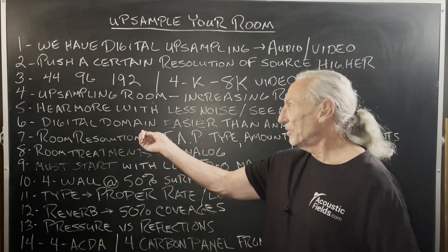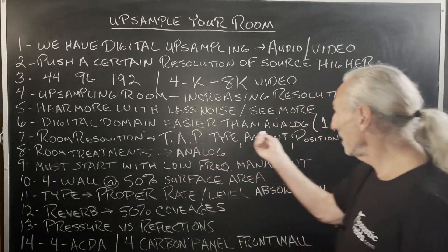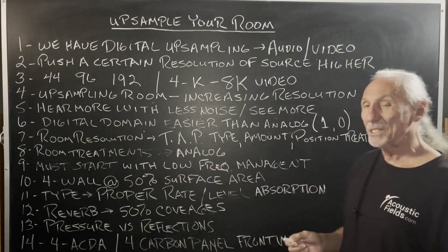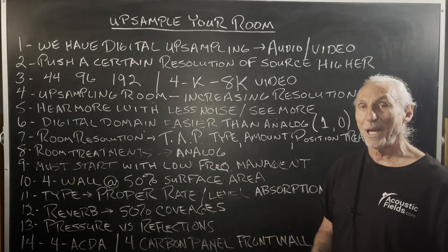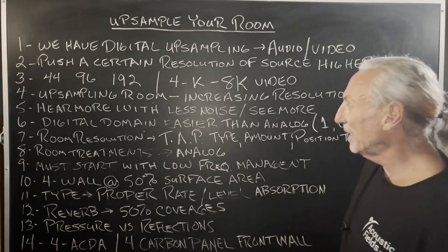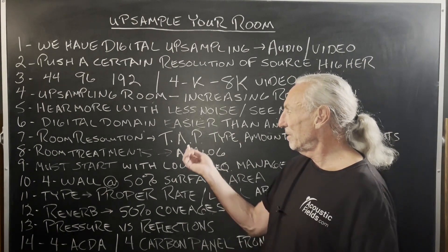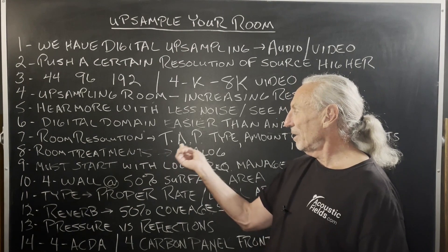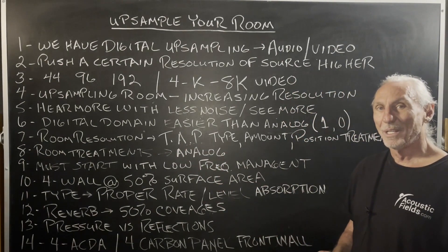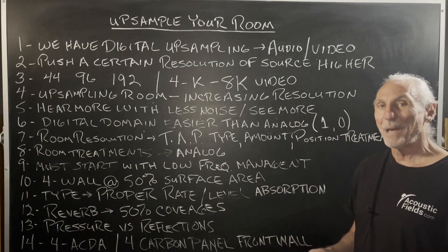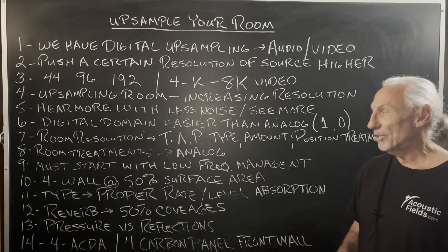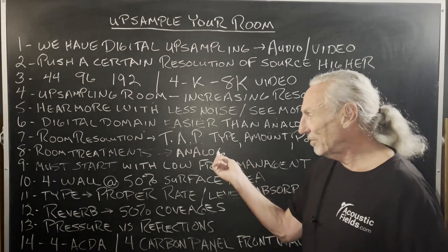The digital domain is much easier than the analog. If we're doing it with ones and zeros, we can manipulate a lot of that data electronically. But in the analog domain in a room, it's all about type, amount, and position of the treatment we're going to use. And treatment is passive — you don't plug it in, it's not active. So it's an analog domain.